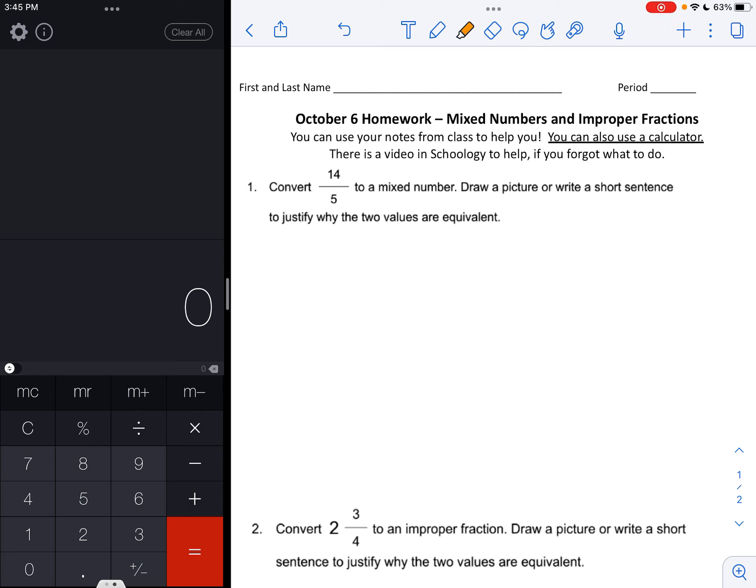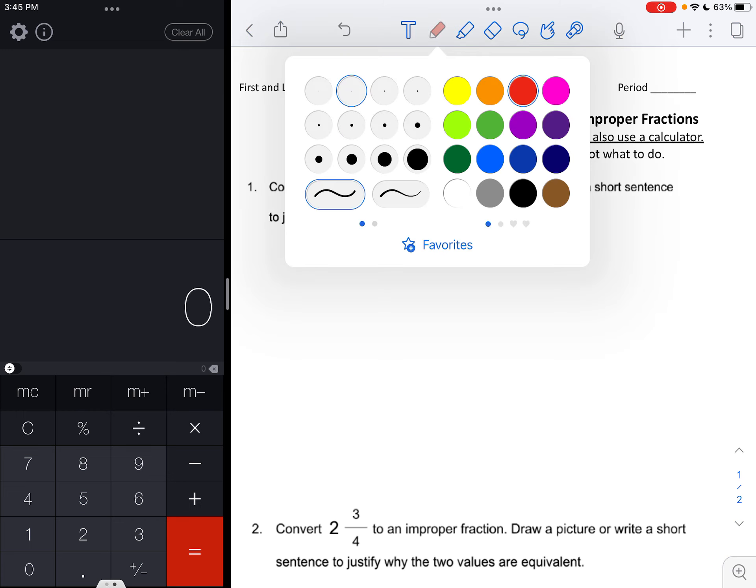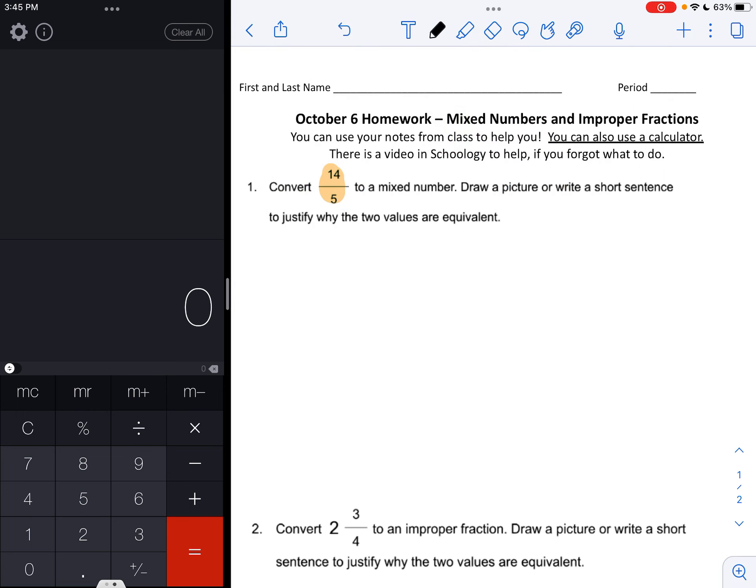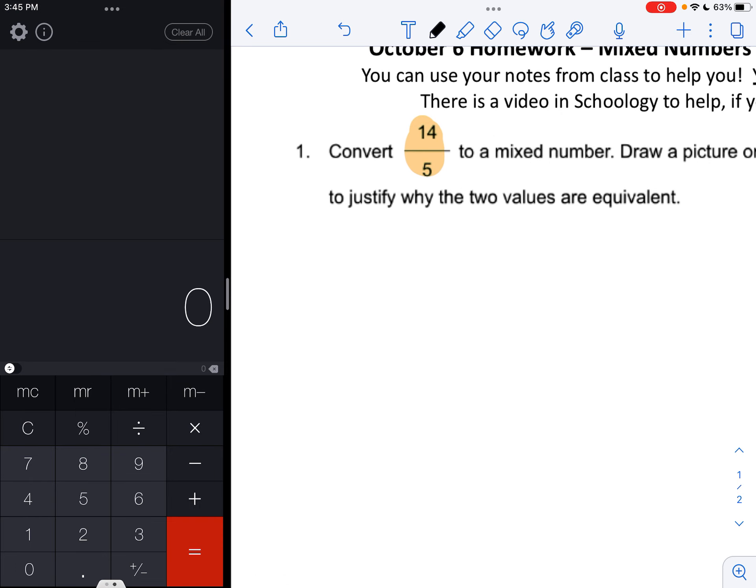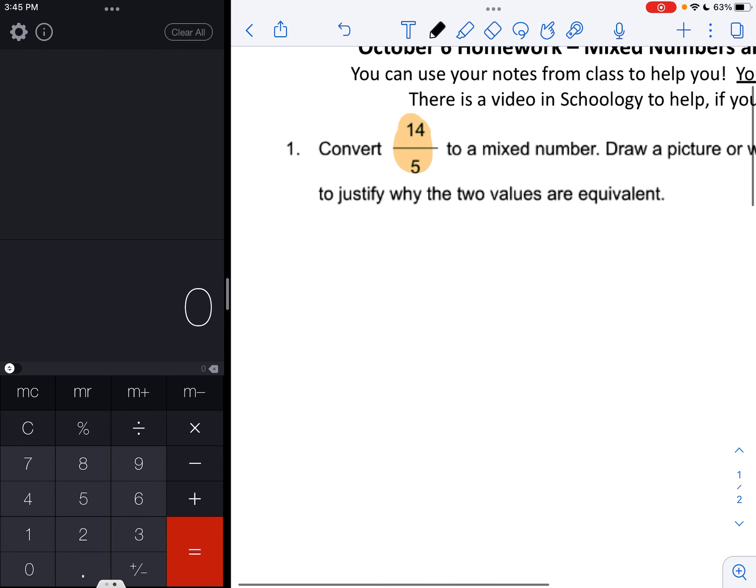The first thing that we're going to want to do is write this fraction as a division statement. When we say 14 fifths, the first number that we say is 14, so that's the number we put first into the calculator. So we say 14, and then we divide it by 5. So 14 divided by 5 is 2 and 8 tenths.